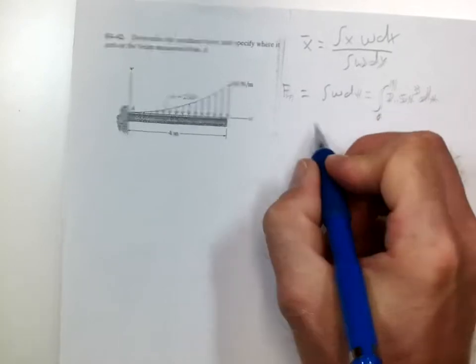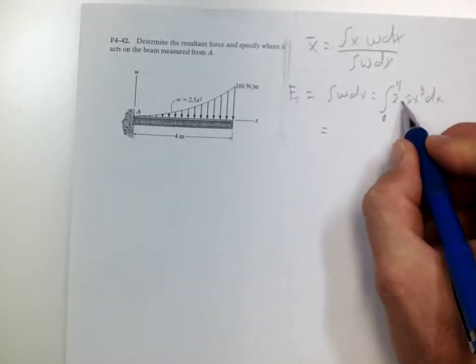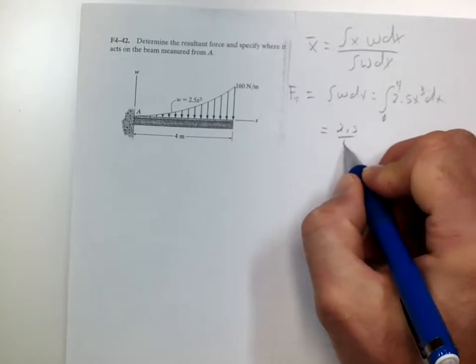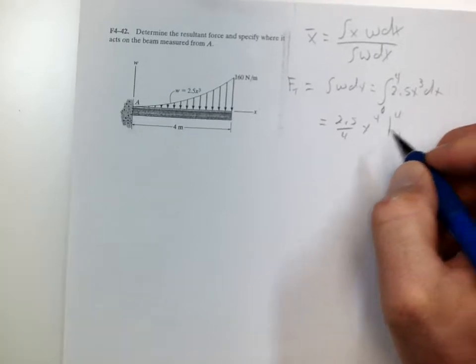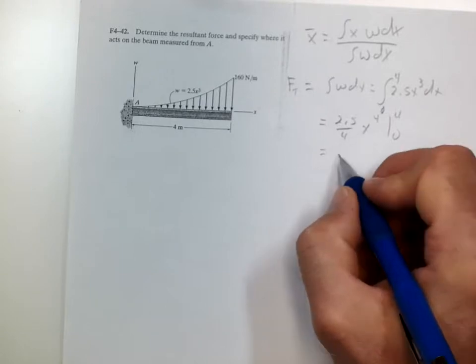So the integral of that is 2.5 divided by 4, x to the 4th from 0 to 4. And that equals 160.